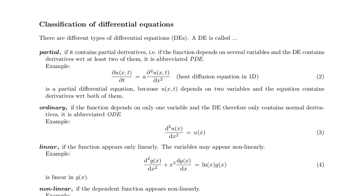The first distinction is between partial and ordinary. A differential equation is ordinary if it only depends on one variable like u of x here, and correspondingly the derivatives in this differential equation are only with respect to this one variable.